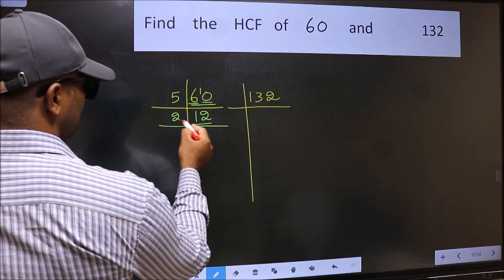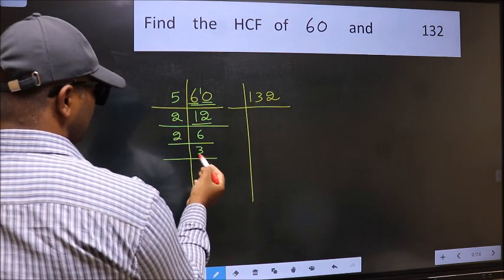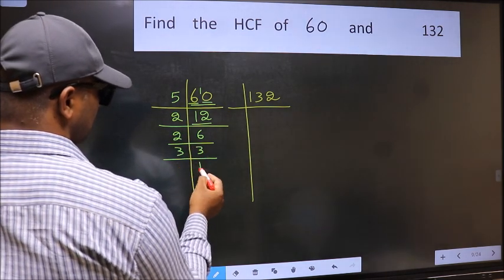Now 12 is 2, 6, 12. 6 is 2, 3, 6. 3 is a prime number, so 3 once 3.